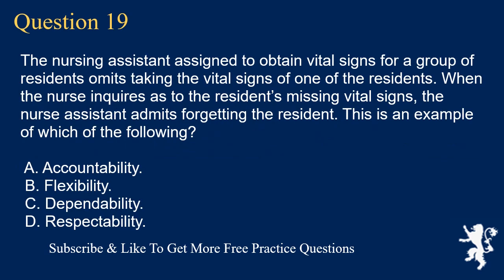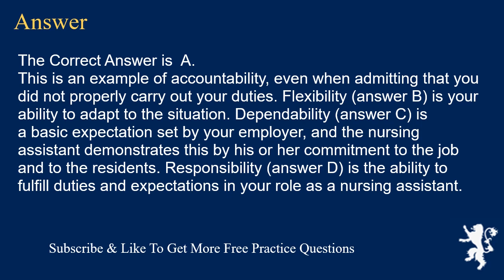Question 19. The nursing assistant assigned to obtain vital signs for a group of residents forgot to take the vital signs of one resident. When the nurse inquires about the missing vital signs, the nursing assistant admits forgetting. This is an example of which of the following? A. Accountability. B. Flexibility. C. Dependability. D. Respectability. The correct answer is A. This is an example of accountability, even when admitting that you did not properly carry out your duties. Flexibility is your ability to adapt to the situation. Dependability is a basic expectation set by your employer. Responsibility is the ability to fulfill duties and expectations in your role as a nursing assistant.